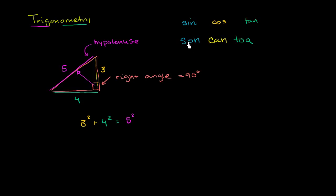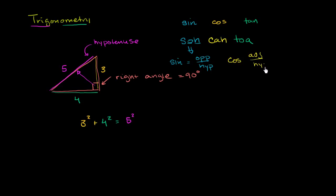SOHCAHTOA tells us: SOH — sine is equal to opposite over hypotenuse. CAH — cosine is equal to adjacent over hypotenuse. And TOA — tangent is equal to opposite over adjacent.